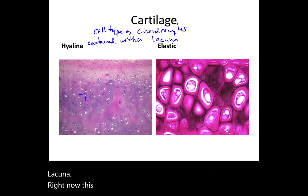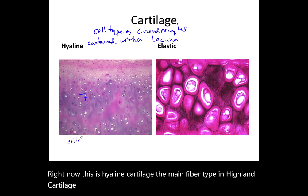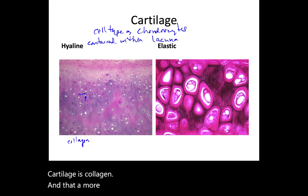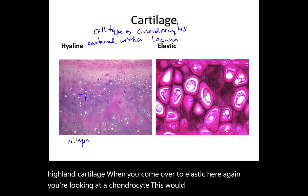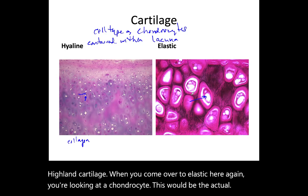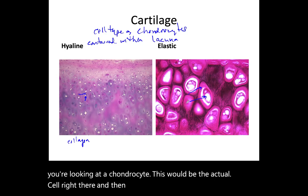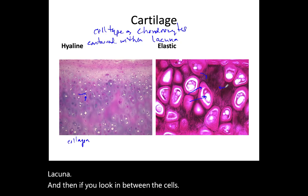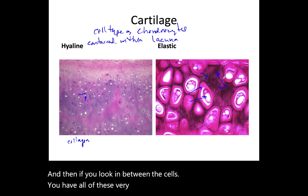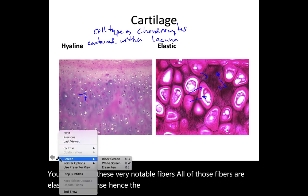In hyaline cartilage, the main fiber type is collagen, and the amorphous ground substance is very plentiful. Coming over to elastic cartilage — here again you're looking at a chondrocyte as the actual cell, with the surrounding area being the lacuna. In between the cells you have very notable fibers — all of those fibers are elastic fibers, hence the name elastic cartilage.